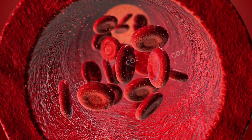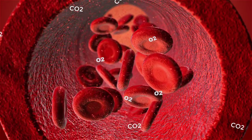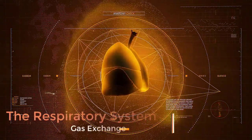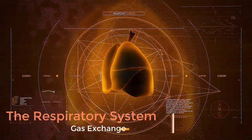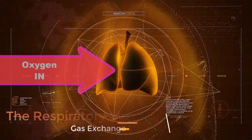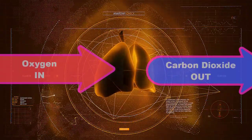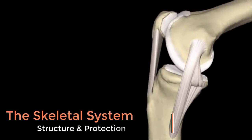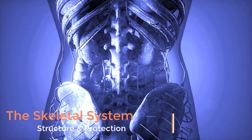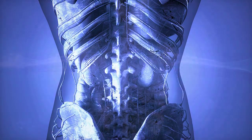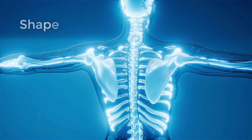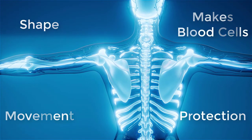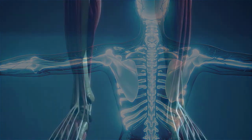When red blood cells pass by the lungs, they release carbon dioxide and pick up oxygen. The respiratory system includes the network of airways that allows for gas exchange — it takes in oxygen and expels carbon dioxide. The skeletal system consists of bones, cartilage, tendons, and ligaments. It works as a supportive structure for the body, gives the body its shape, allows for movement, makes blood cells, provides protection, and stores minerals.